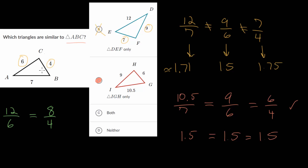Once you prove that two triangles are similar, we also know that the corresponding angles are equal. Angle A, between the longest side and the middle side, will be equal to angle I since that is also between the long side and the middle side. Angle C between the small and the middle side will be equal to angle H, and angle B between the small side and the large side will be equal to angle G.